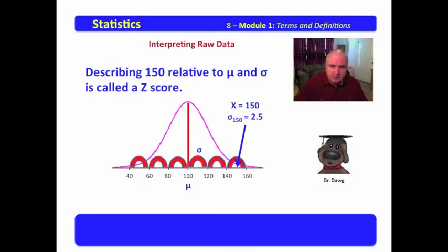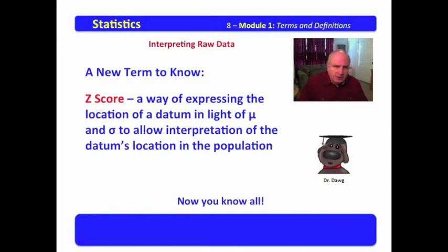Describing 150 relative to mu and sigma is called a Z-score. The Z-score for 150 is equal to 2.5. Now, we have a new term to know, that of Z-score.